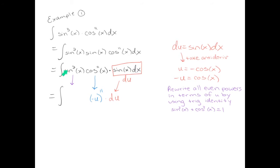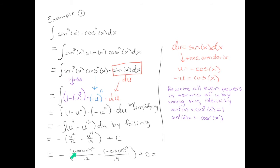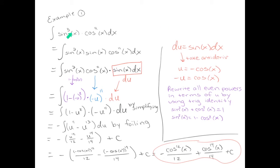We have a trig identity that lets us rewrite even powers of sine in terms of cosine. Since u equals cosine, we use the identity: subtracting cosine squared from both sides gives sine squared equals 1 minus cosine squared. So this sine squared becomes 1 minus cosine squared, and since cosine equals negative u, we get 1 minus negative u squared. Now we can foil and simplify, take the antiderivative, and put u back in. A minus sign raised to an even power becomes positive, so after distributing the minus sign, we have our final answer — which we can verify by taking the derivative.